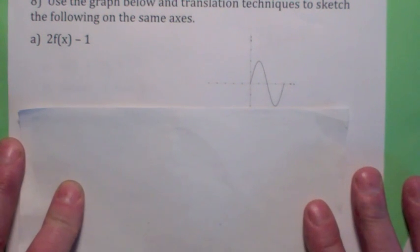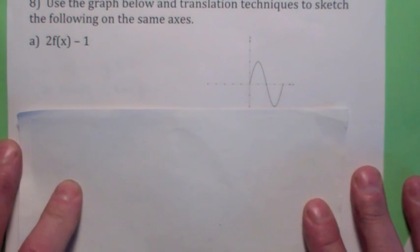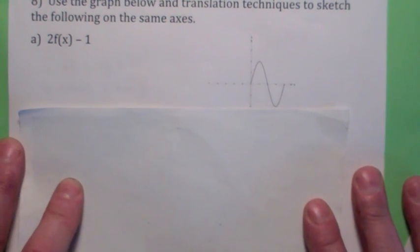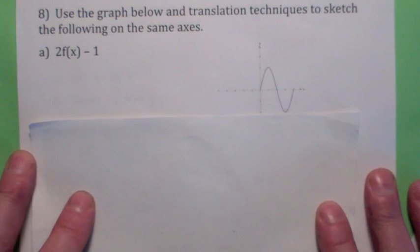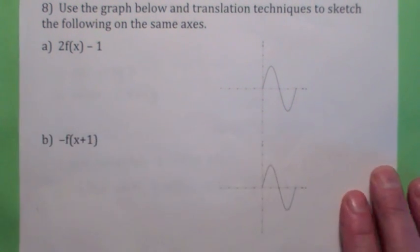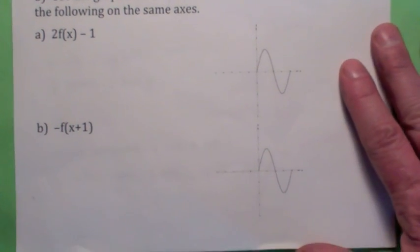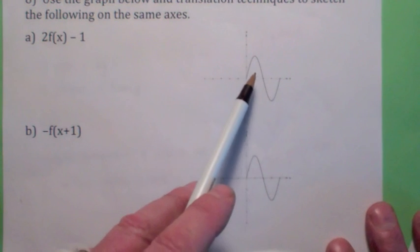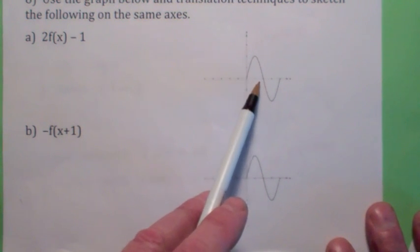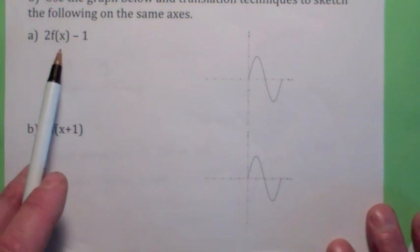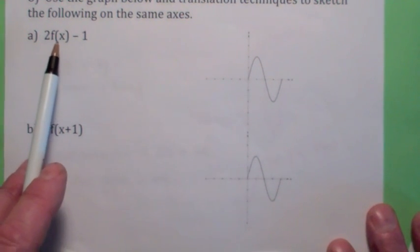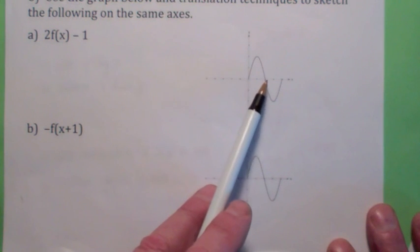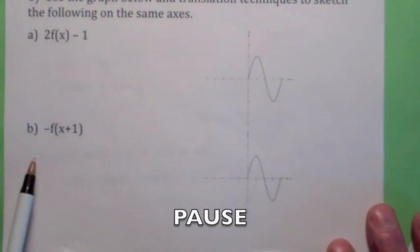Teachers love to ask you these kinds of questions where they don't give you a function — they give you a graph instead. So why don't you try these two? I'll go over it in just a second. See if you can work these two on your own. Here's the graph of f(x) — see if you can hit the pause button and graph 2f(x) − 1 on the same axis, and also −f(x + 1).